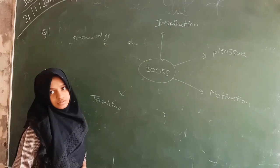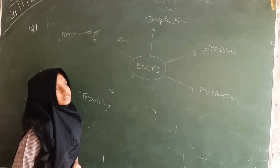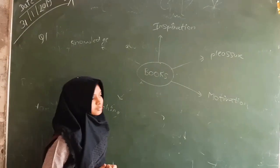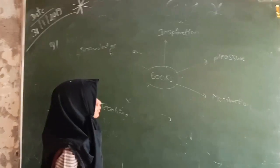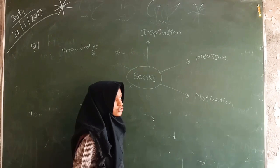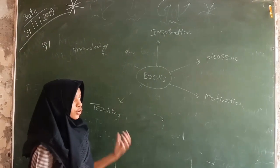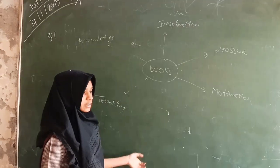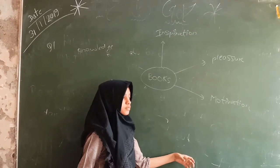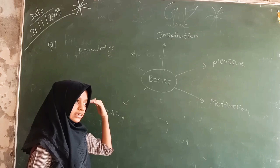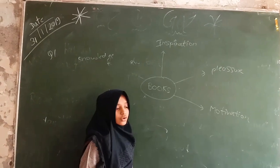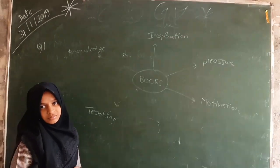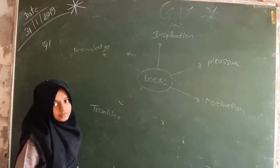The second point is pleasure. How can books give you pleasure? Books give you strength — there are stories of heroic persons like Steve Jobs. Reading and understanding their life stories gives pleasure. You can also read comics for pleasure. The motivation point is also covered here.